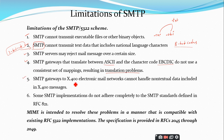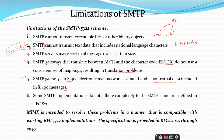Similarly, SMTP gateways to X.400 electronic mail networks cannot handle non-textual data included in X.400 messages. Remember: SMTP always concentrates on textual data; other formats are very difficult to transfer using SMTP. Finally, SMTP does not always adhere to the standards defined in RFC 821, which is another disadvantage.